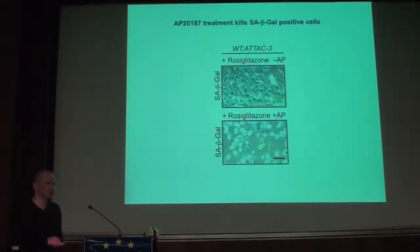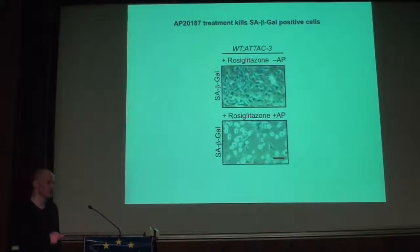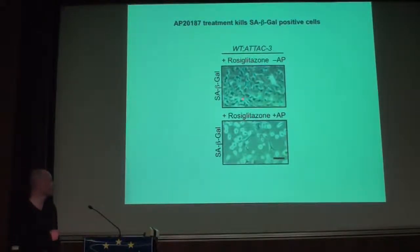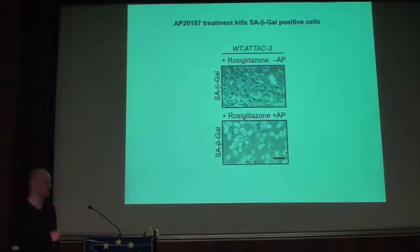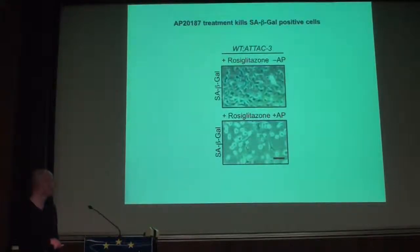We showed that the transgene is expressed, but we also needed to show that the drug actually kills the beta-gal-positive cells. We isolated bone marrow cells from wild-type ATTAC animals and induced senescence by adding the drug. Senescent cells are clearly visible by the blue color, and after adding the drug AP20187, all blue cells disappeared, meaning the drug killed all beta-galactosidase-positive cells.